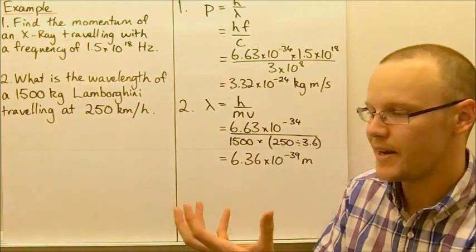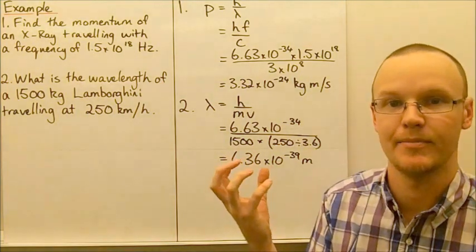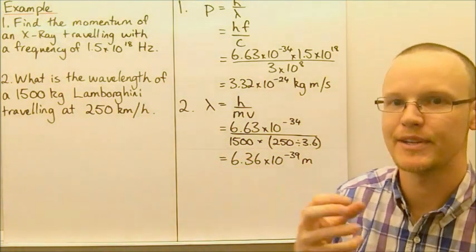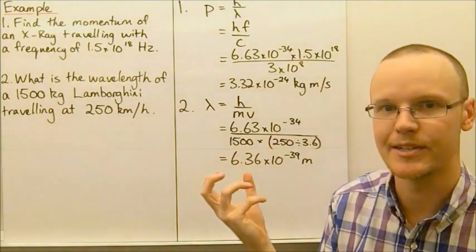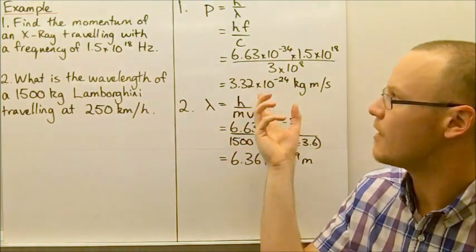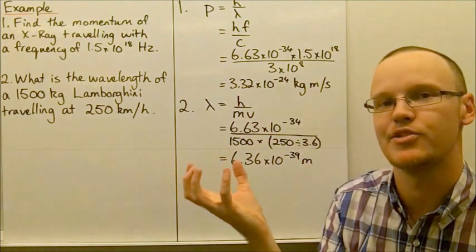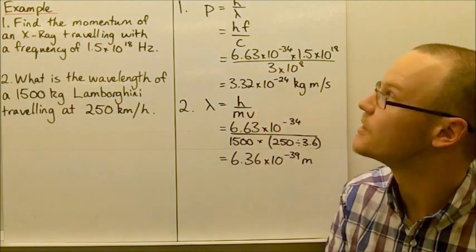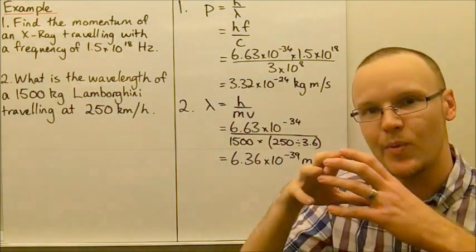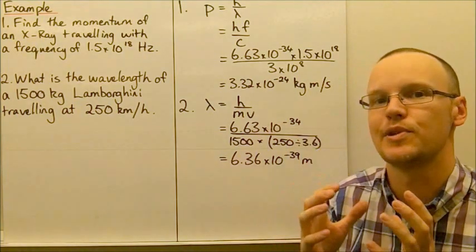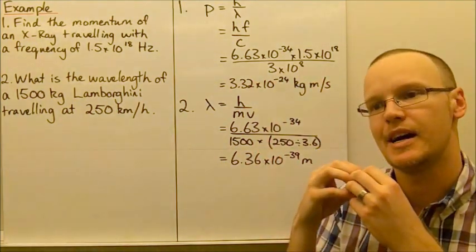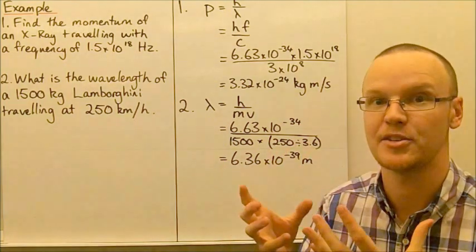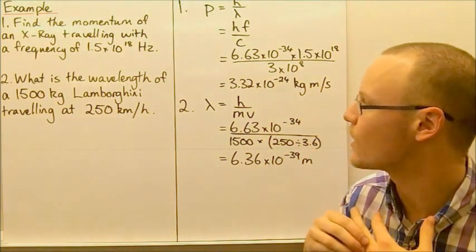If you think about a 1 kilogram baseball traveling at about 20 meters per second, that's going to have a much larger amount of momentum than this will have. But when trillions and trillions of photons, of X-ray photons are being involved, then the momentum can be quite great, can be quite large.